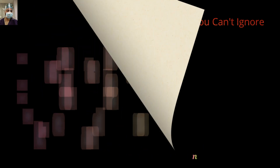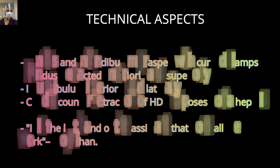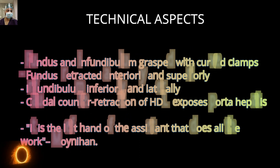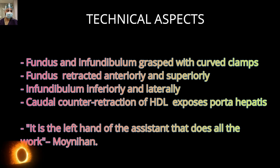The technical aspects of open cholecystectomy are similar to the laparoscopic method. The fundus and infundibulum are grasped with curved clamps. The fundus is retracted anteriorly and superiorly toward the right shoulder, as in laparoscopic cholecystectomy. The infundibulum is retracted inferiorly and laterally toward the right iliac fossa, which provides proper vector force and opens the Calot's triangle.